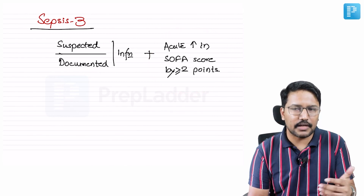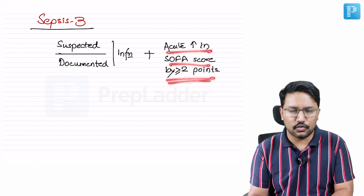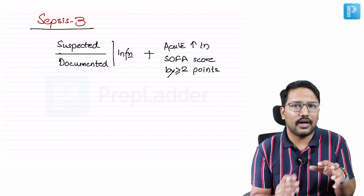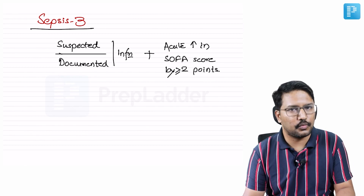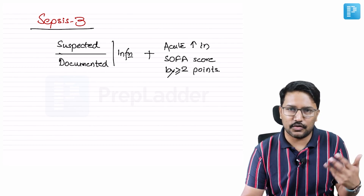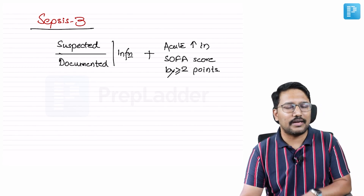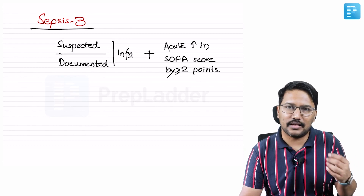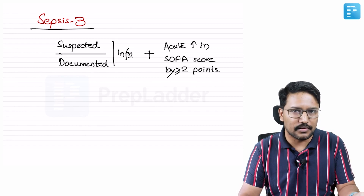This definition is very important because when we say acute rise in SOFA score by more than or equal to two points, we are not considering patients who already have a baseline SOFA score above zero. What goes into making SOFA points includes renal dysfunction, CNS dysfunction, hematological abnormalities, and liver dysfunction. So if a patient already has a baseline hematological, renal, or CNS disorder, they will have a SOFA score that is not zero.